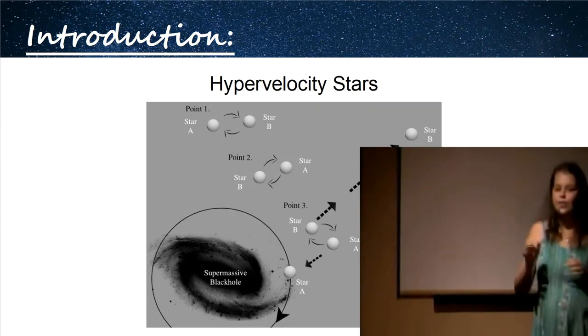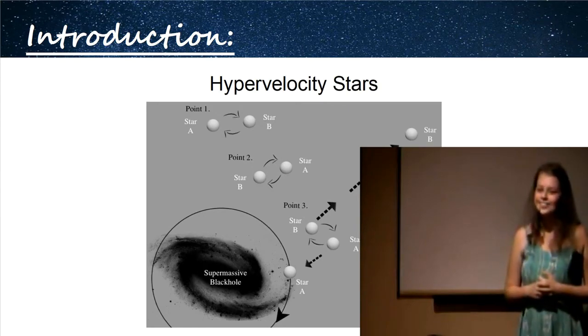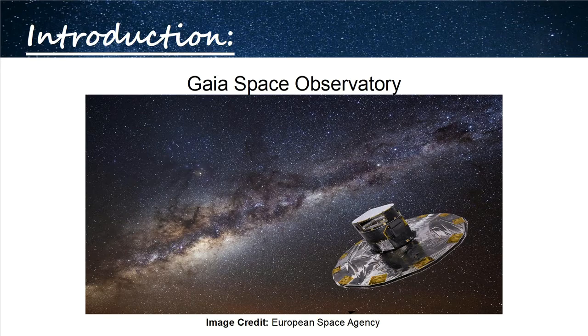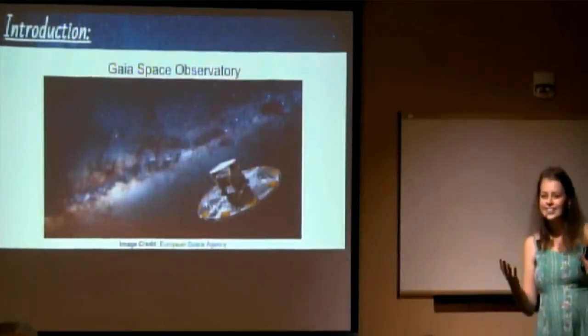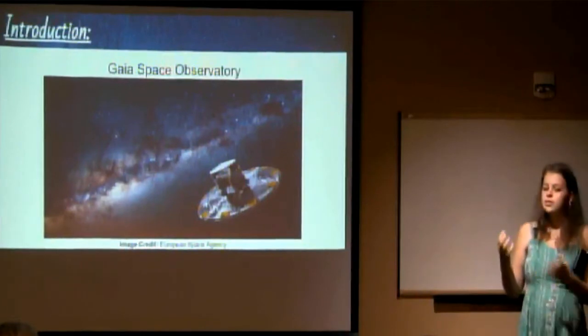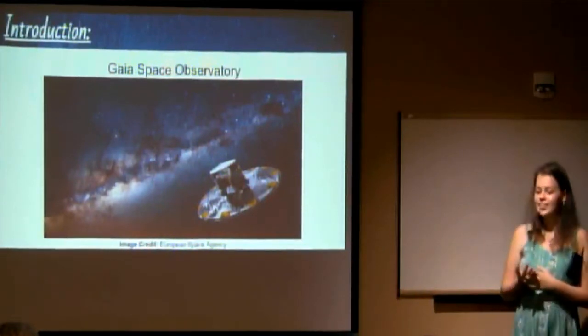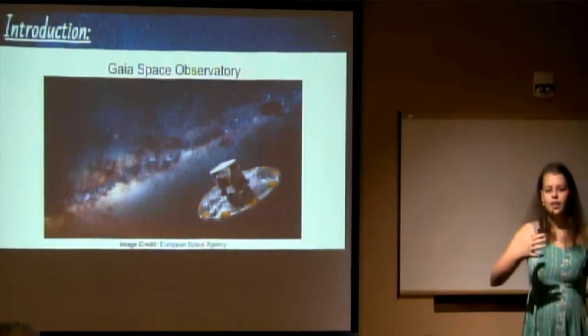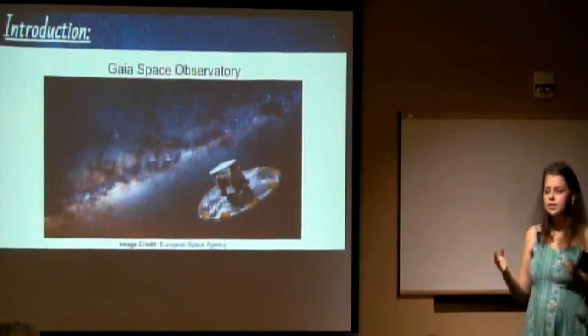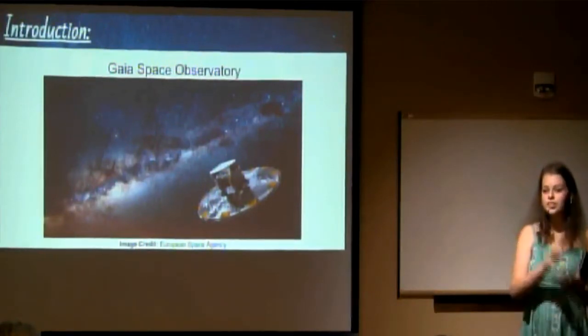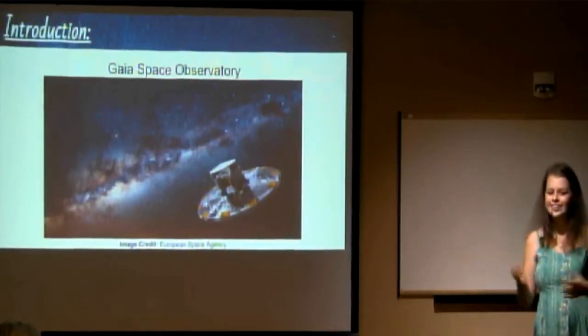And so again, at point one, we have star A and B. They're orbiting each other. Point two, they continue orbiting each other. But at point three, star A is then captured by the supermassive black hole, so that star A is now orbiting the supermassive black hole. And again, due to conservation of energy, that other star B is then ejected out of the galaxy. And to give you a little perspective, some of the slower ones are about 2.2 million miles per hour, really fast. And so basically, for my project, I've been working with these guys for a little while, but I wanted to identify my own candidate selection.